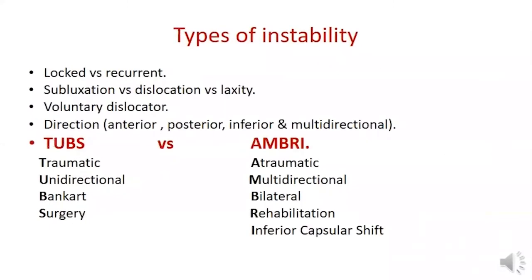The two main types of shoulder instability are TUBS — traumatic unidirectional instability with Bankart lesion that usually requires surgery — and AMBRI — atraumatic multidirectional bilateral instability, which responds well to rehabilitation and may need anterior capsular shift.